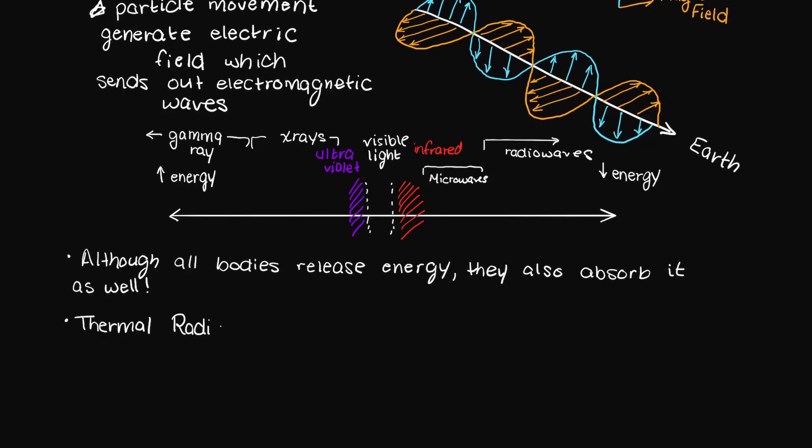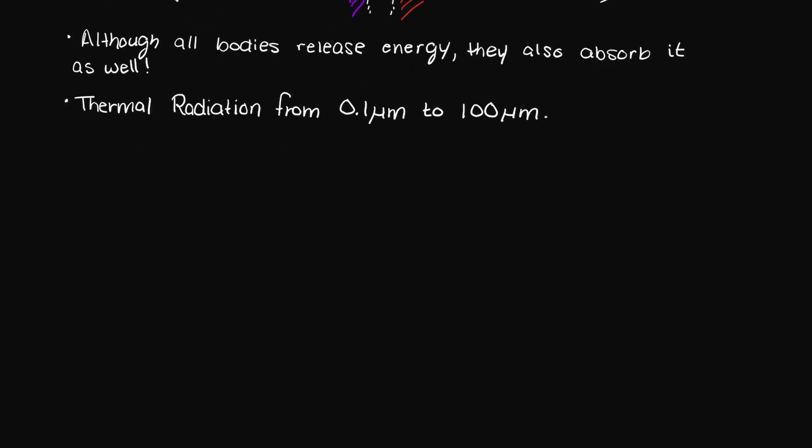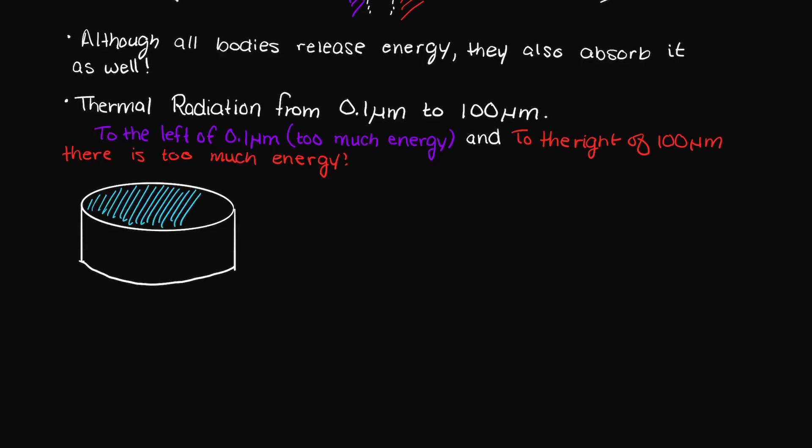I just want to add that thermal radiation wavelengths are typically from 0.1 microns, which is in the ultraviolet range, to about 100 microns, which is in the infrared portion of the electromagnetic spectrum. To heat up many molecules in organic material, like the water inside of us humans, the waves need to be at a certain frequency and energy. So to the left of 0.1 microns there is simply too much energy, and to the right of 100 microns there is simply too little energy.